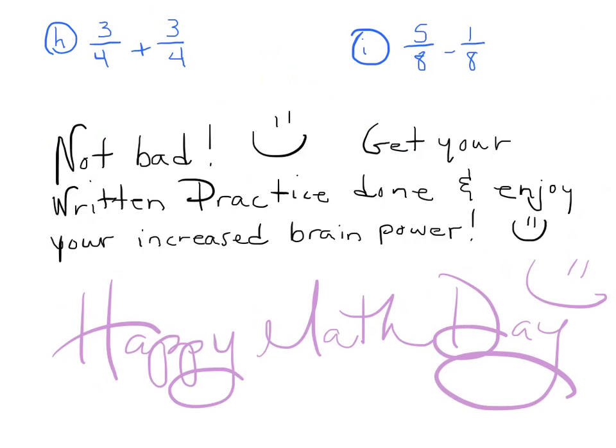So we have H. And we have 3 fourths plus 3 fourths. That's going to equal 6 fourths. We have 4 goes into 6. It goes in 1 time. And there's 2 fourths left over. I look at the 2 fourths. I see that they're both even numbers. I also look at this and I go, wait a minute. 2 is exactly half of 4. So my answer is going to be 1 and 1 half. And then on I, we have 5 eighths minus 1 eighth. That's going to give us 5 minus 1 is 4 eighths. We look at this and we go again, looky here. The 4 is exactly half of 8. The answer is going to be 1 half. Hooray! Not bad.